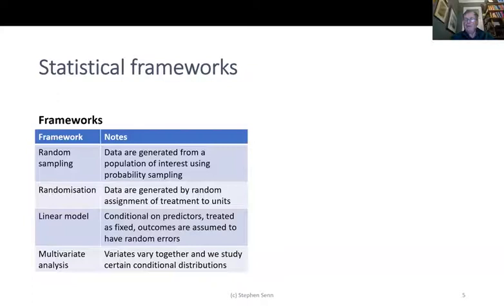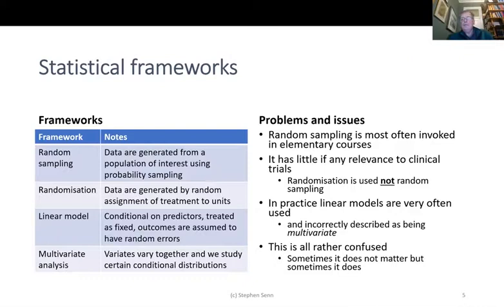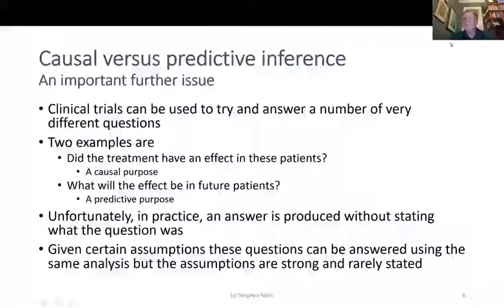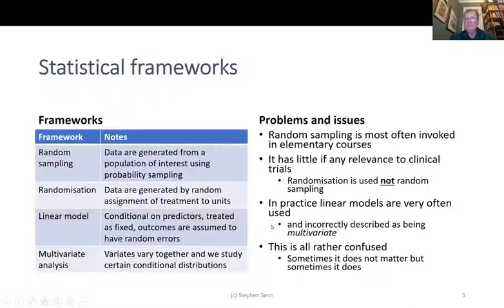What are the problems with these frameworks? Random sampling is most often taught in elementary courses but has little if any relevance to clinical trials. Randomisation is used in clinical trials, but random sampling never is. The idea of treating patients as if they were representative of some target population is fundamentally misleading. In practice, linear models are often used and incorrectly described as multivariate — this is all rather confused.